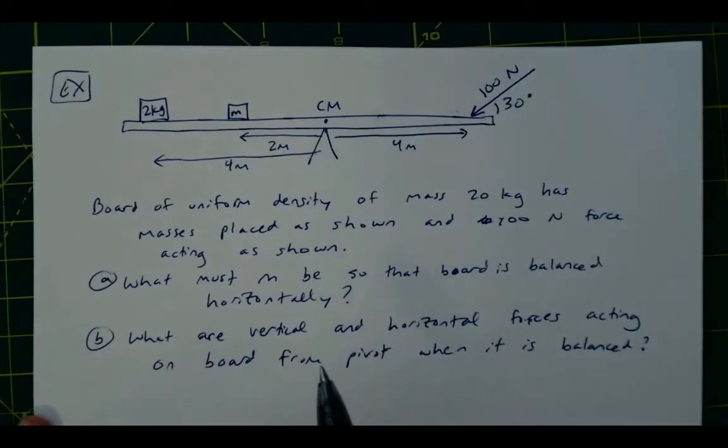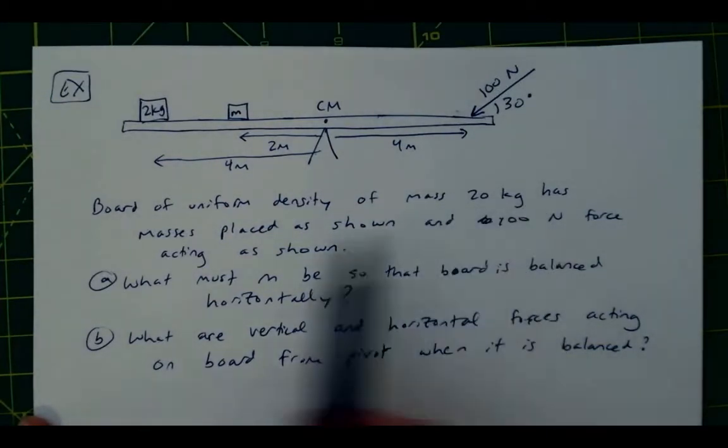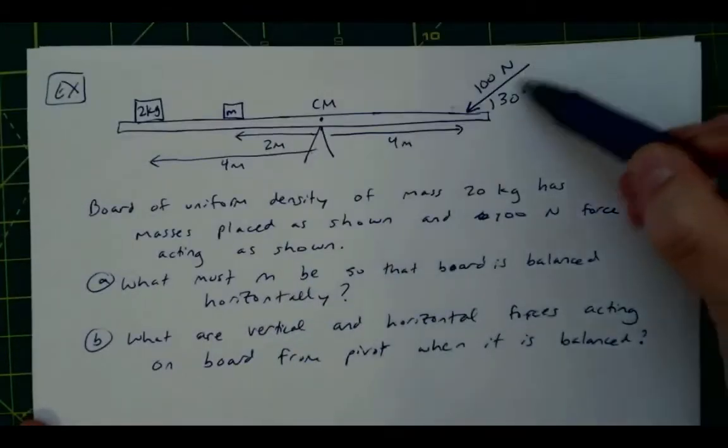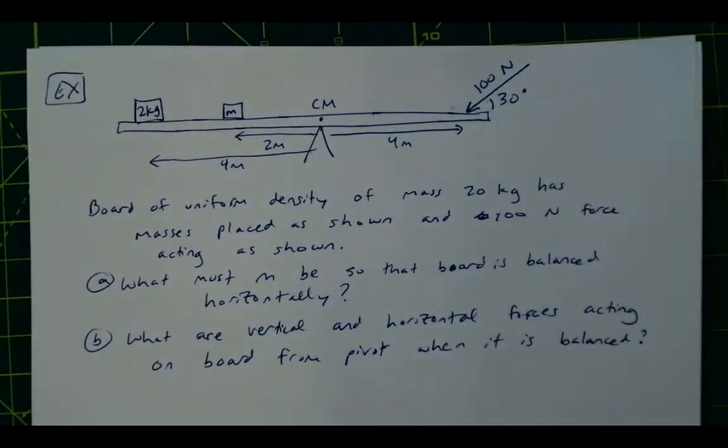And in this case then, that would be right above this pivot. The mass of the board is 20 kilograms, and then it has these masses, that are placed as shown, and a 100 newton force acting as shown. So this 100 newton force, then is acting 30 degrees to the horizontal.